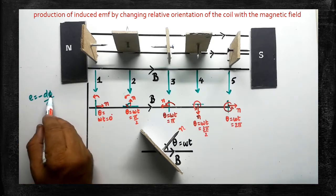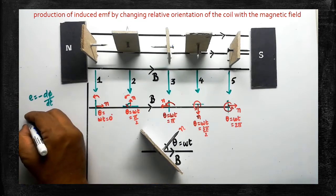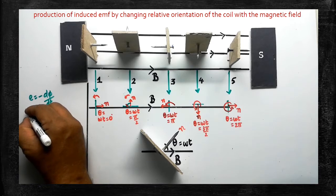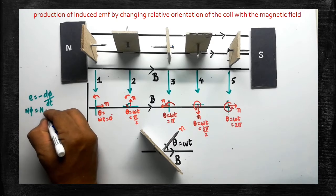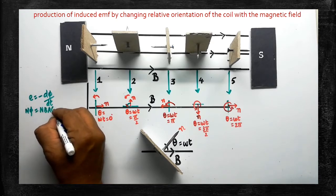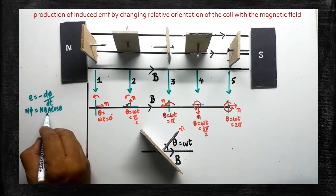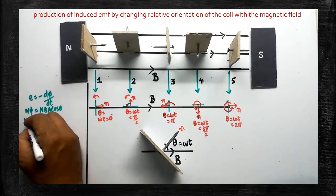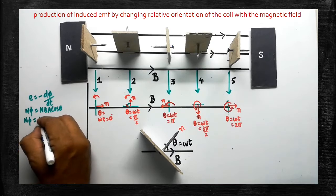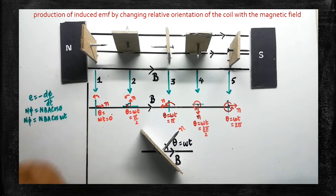The magnetic flux linked with N number of turns is N·B·A·cos(theta). Instead of theta we can write omega t, so NΦ = N·B·A·cos(ωt). Since the EMF is linked with N number of turns, we write E = −N·dΦ/dt. Substituting, E = −d/dt of N·B·A·cos(ωt). While the coil is rotating, N, B, and the area A are not going to be altered — the orientation alone changes.